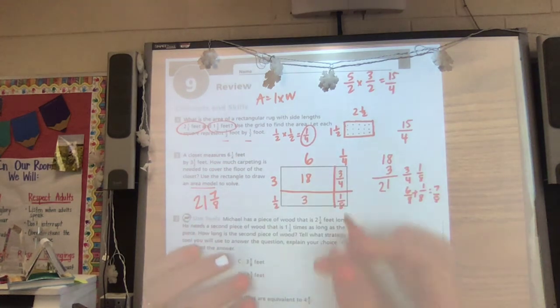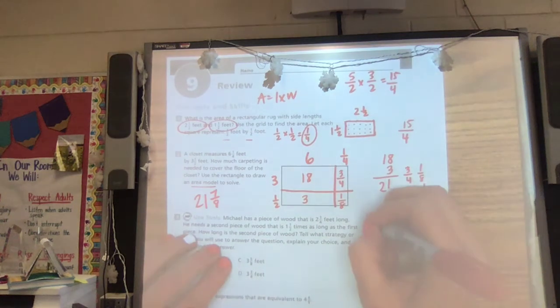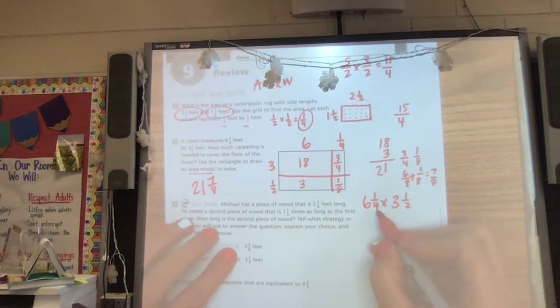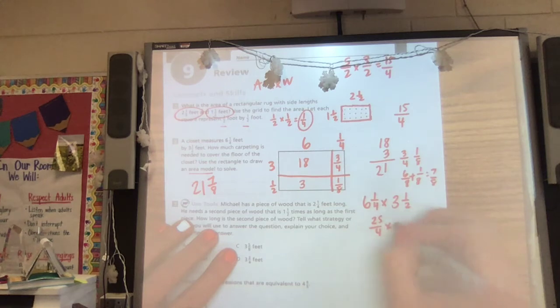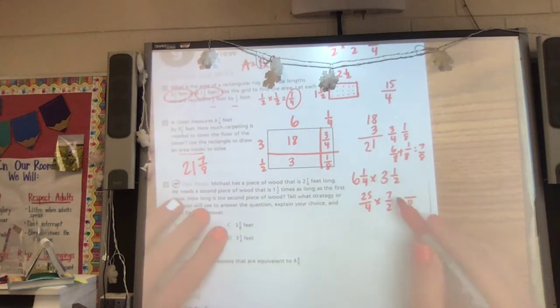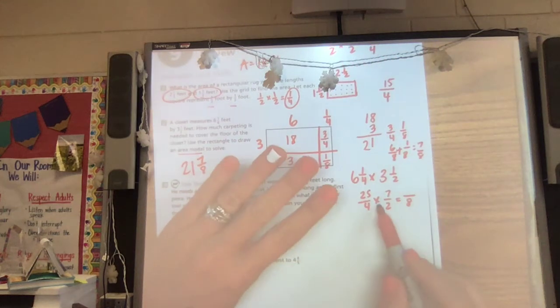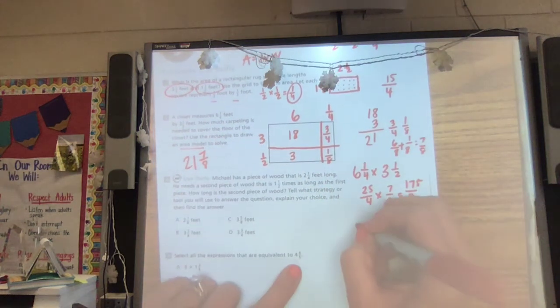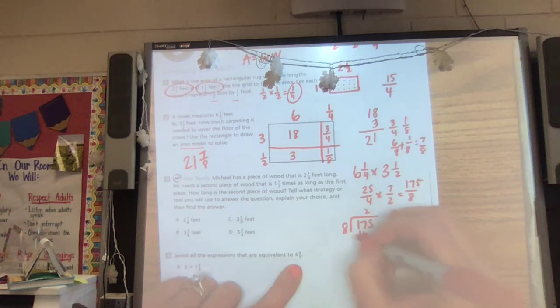If you didn't want to choose to do it that way and you need to work it out and then see which model shows your answer, that would be fine. Four times six is 24 plus one is 25 fourths. Two times three is six plus one is seven halves. 25 times seven. I know my quarters. Four would be a dollar. So that would be 175.